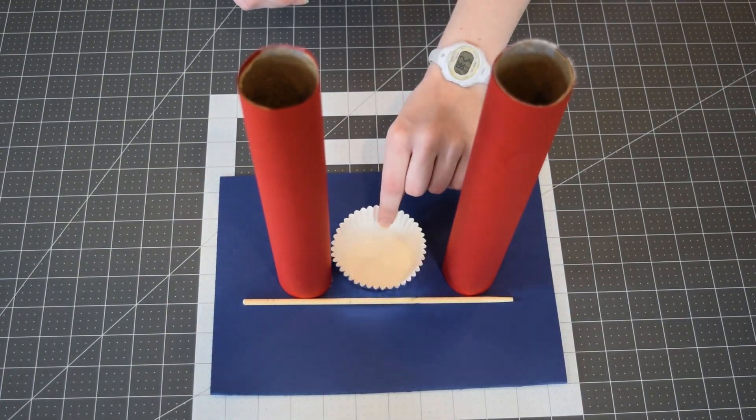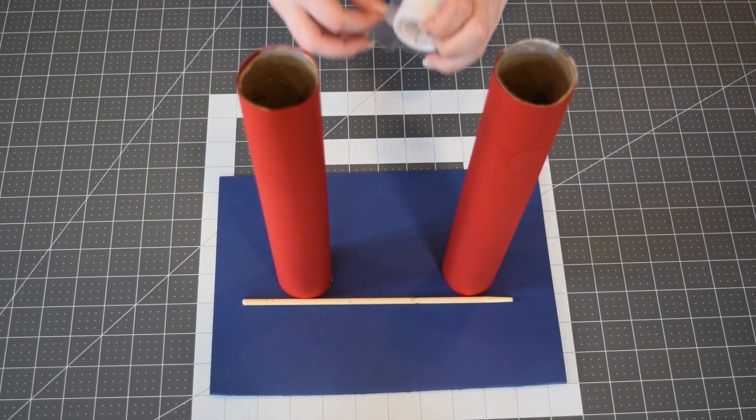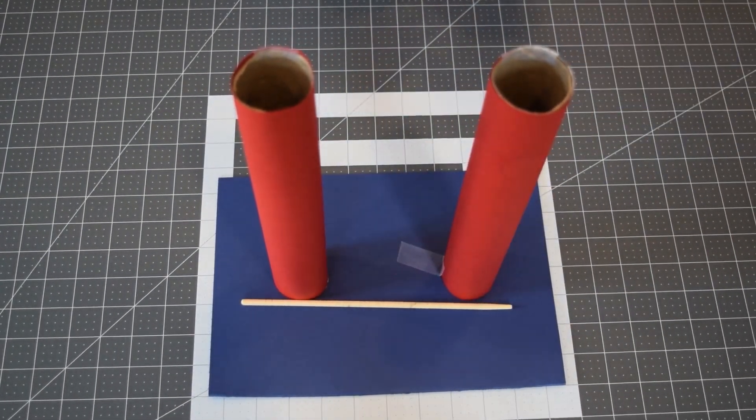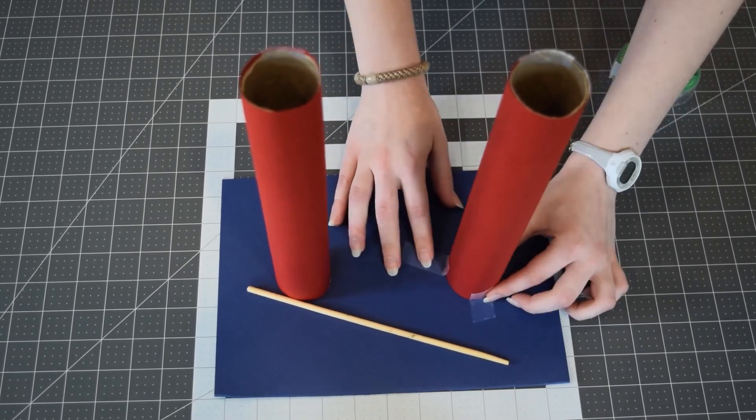We're using that along with the muffin tin to make sure that we're putting our tubes far enough apart, and then we're going to use three pieces of tape on each tube to securely fasten it to that cardboard base.